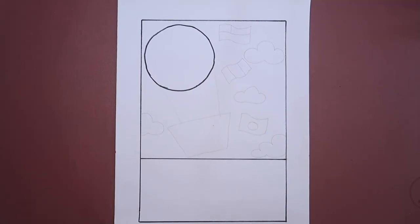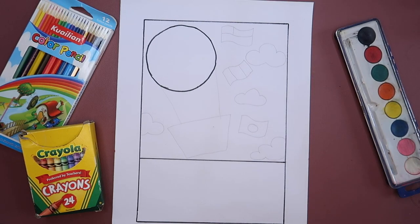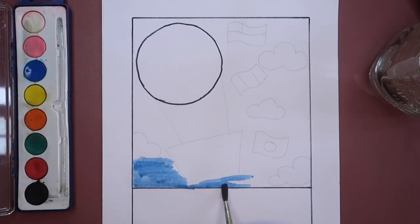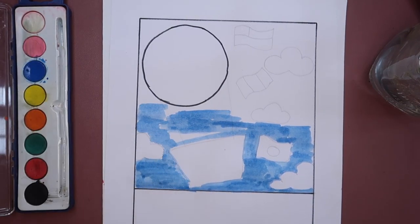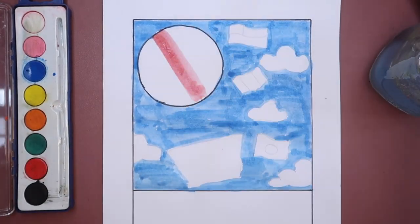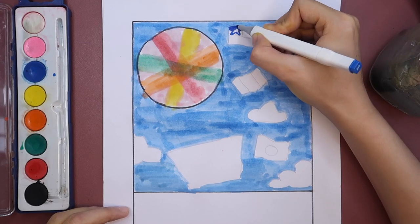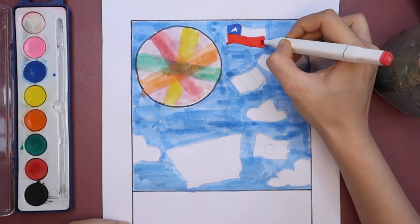Next step is to color your work. You can use any material for this artwork. Colored pencils, crayons, markers, watercolor, or poster paint. I chose watercolor for my background. Again, you can use crayons if you like. For the flags, I used markers, but you can use any material in coloring your work.